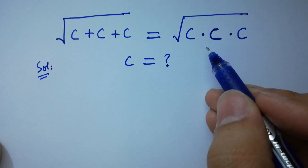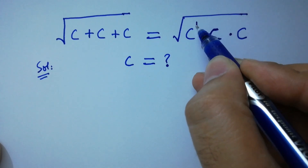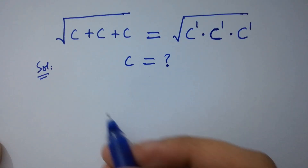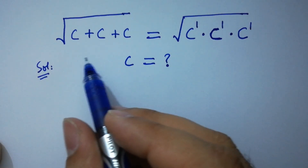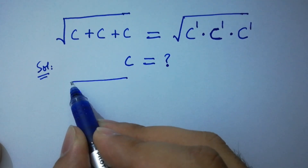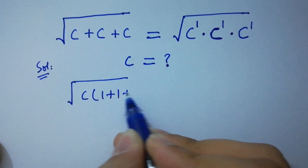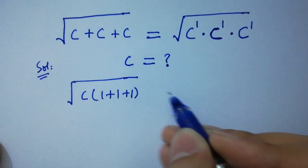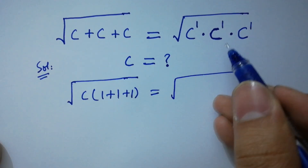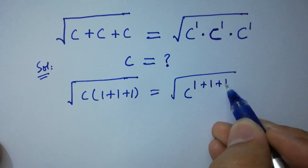On the right hand side, we can write c to the power 1, c to the power 1, c to the power 1. Then on the left hand side, c can be common. We have c times 1 plus 1 plus 1, and on the right hand side, base same, power adds: we have c to the power 1 plus 1 plus 1.